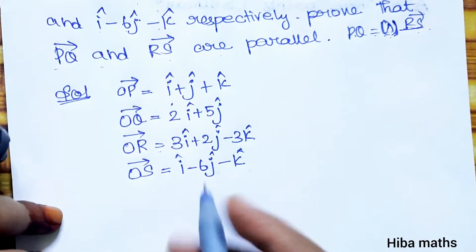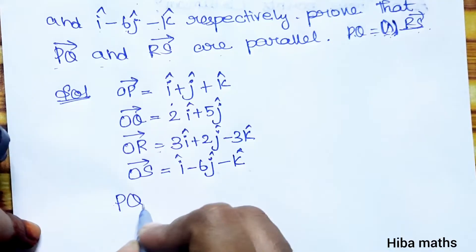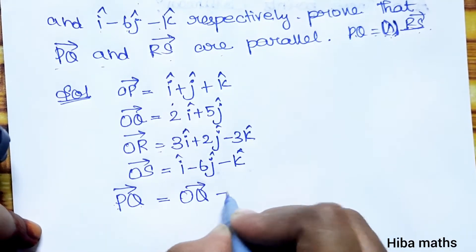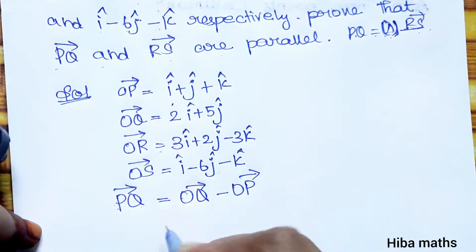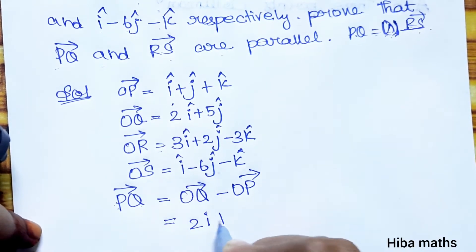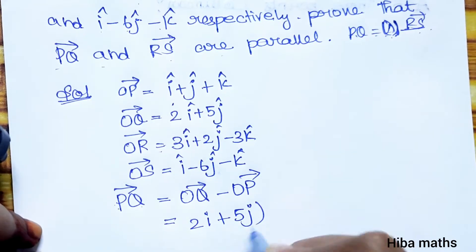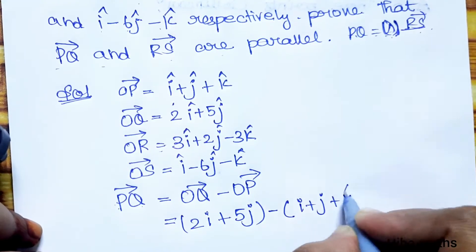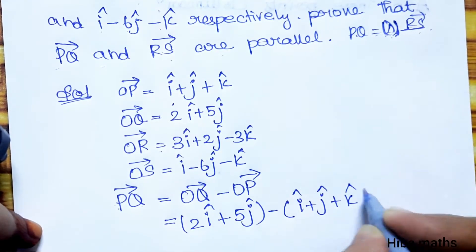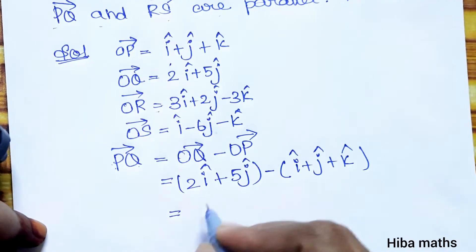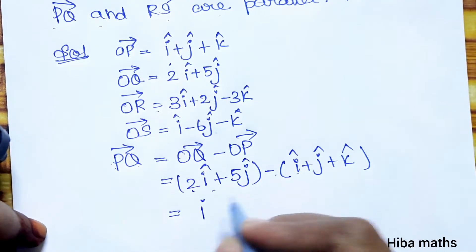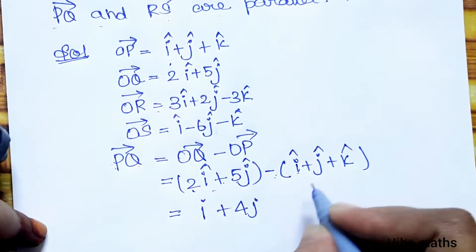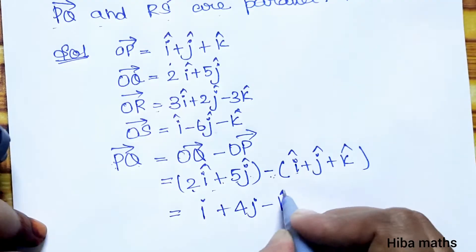PQ vector equals OQ vector minus OP vector. OQ is 2i plus 5j, and OP is i plus j plus k. Subtracting gives: (2i minus i) plus (5j minus j) plus (0 minus k), which simplifies to i plus 4j minus k.